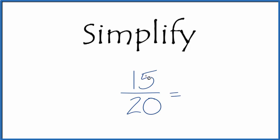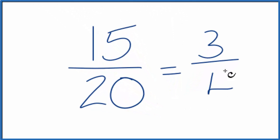So let's divide 15 by 5. That gives us 3. 3 times 5 is 15. 20 divided by 5, that gives us 4.